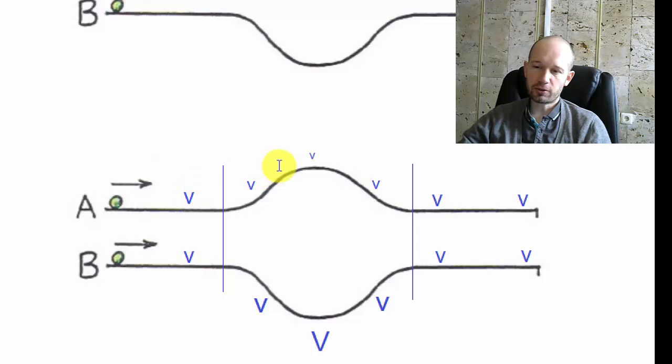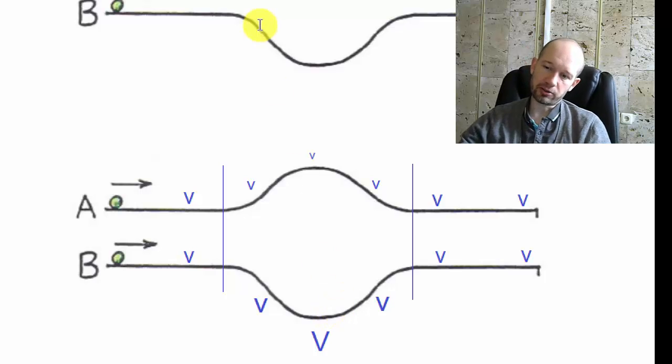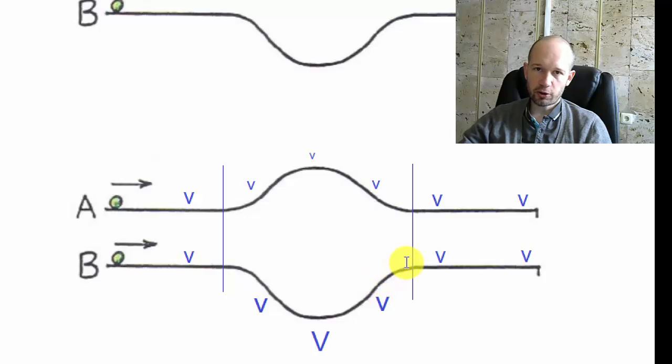Now compare that to ball B. Ball B starts rolling down and its speed increases compared to the initial speed. And even when it's coming up the hill, so when its speed is going down, it's going down but reaches the original value only when it's already out of the dip. So everywhere inside, it was moving faster than originally.